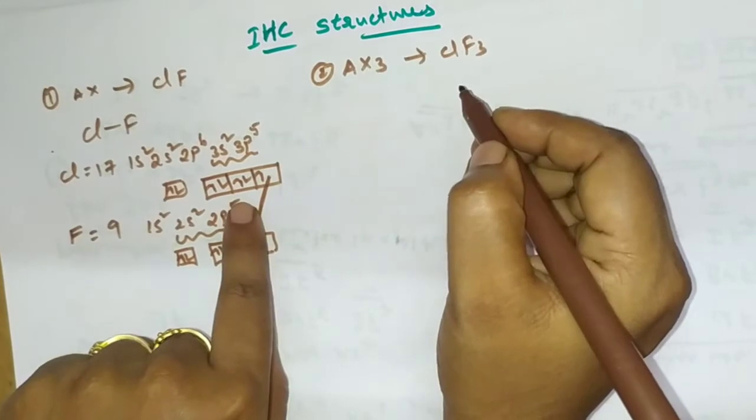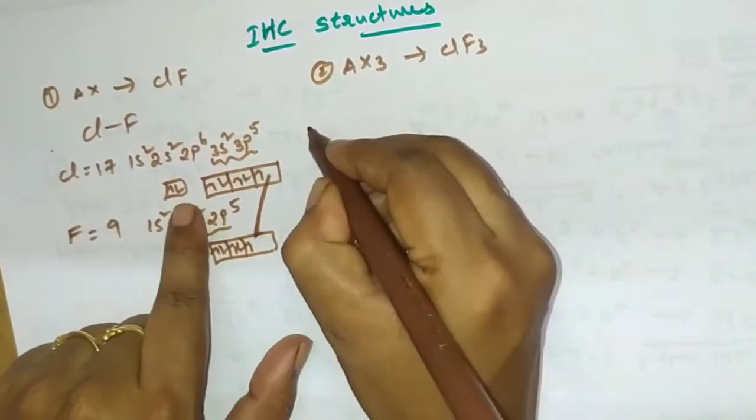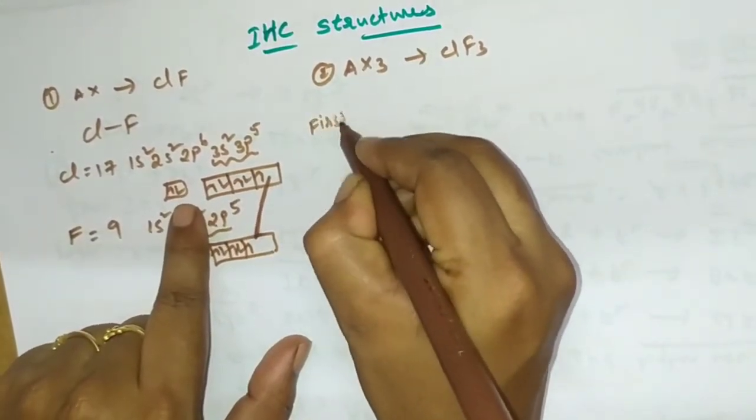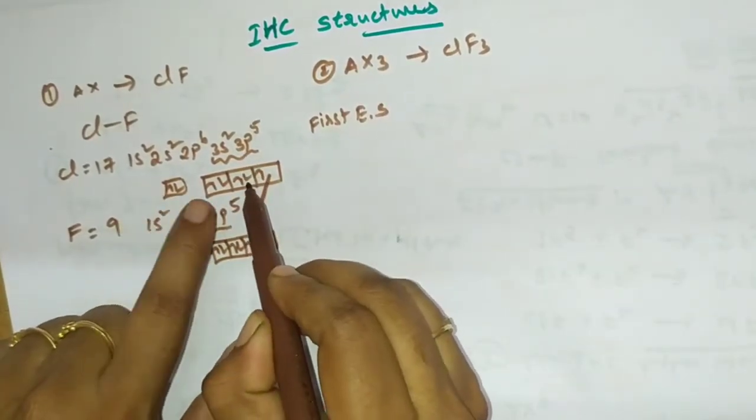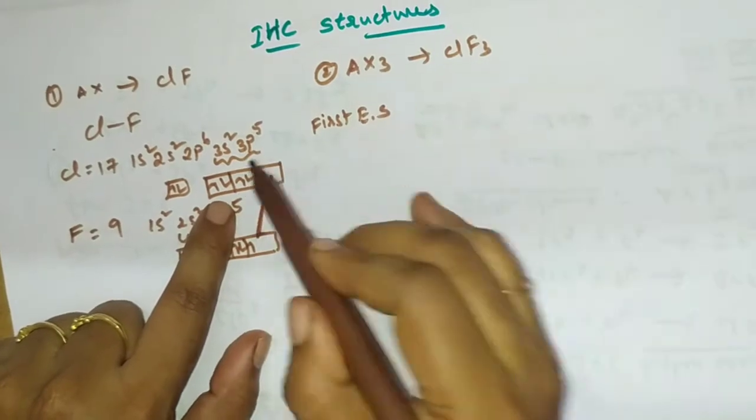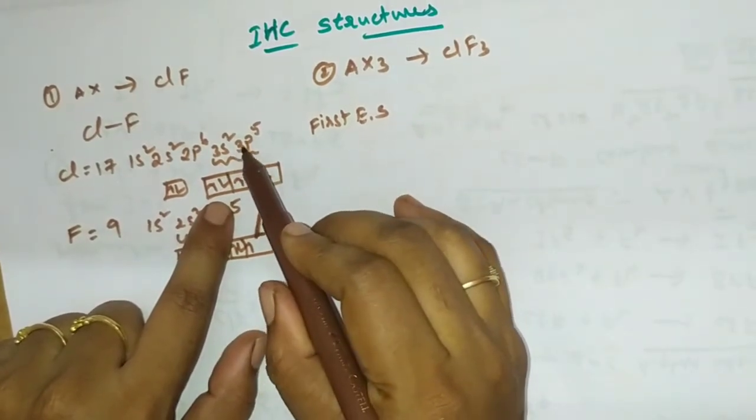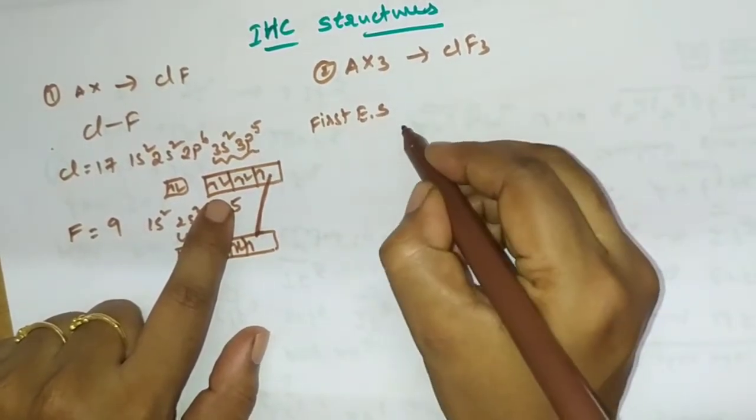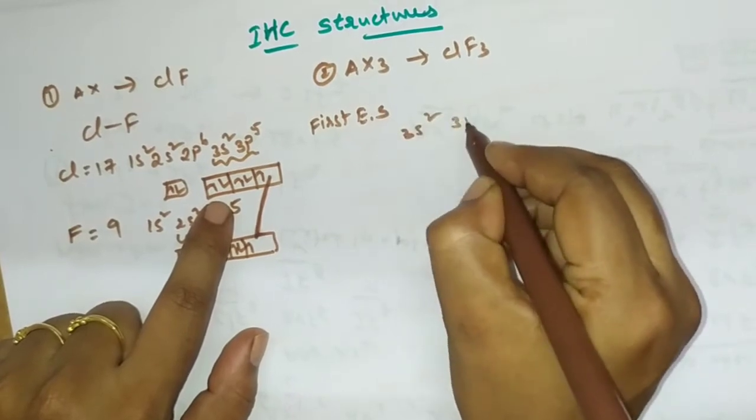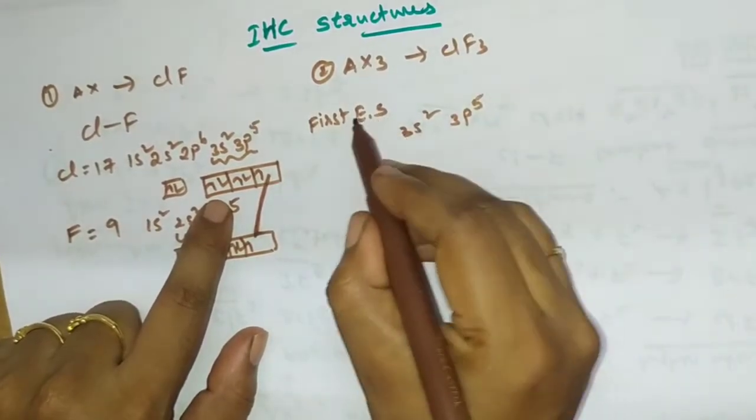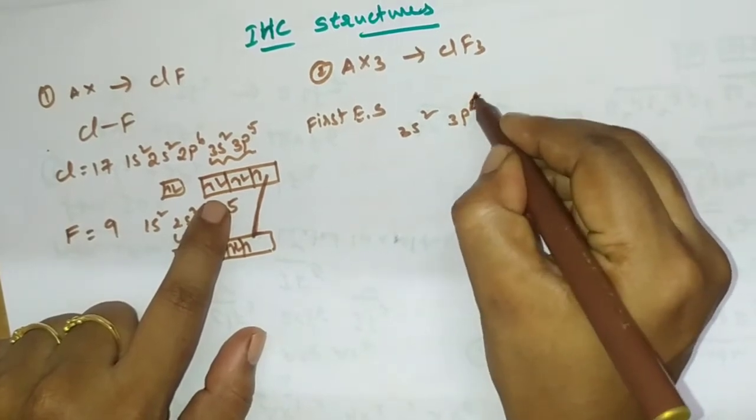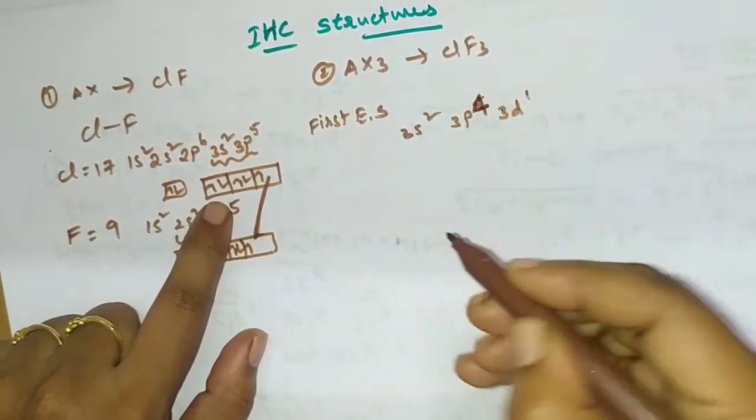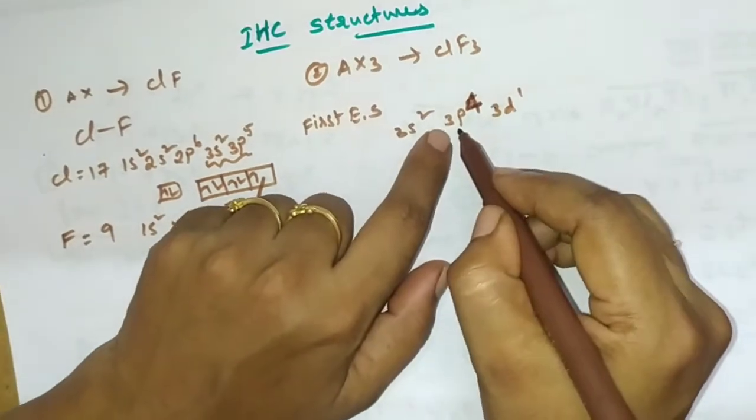So here same chlorine general configuration we know. In the first excited state, first excited state, chlorine here one electron jumps to another level according to Moller diagram. 3p after 3d level comes. 3s2 3p5 we are having. In excited state this 5 will be like 4 and the next 3d1.